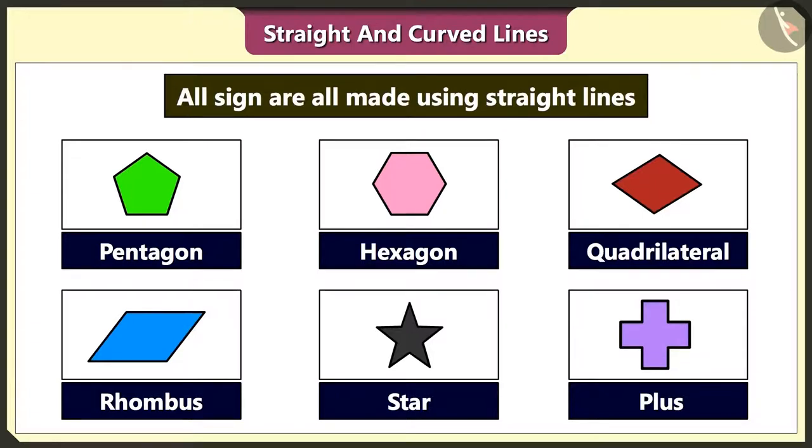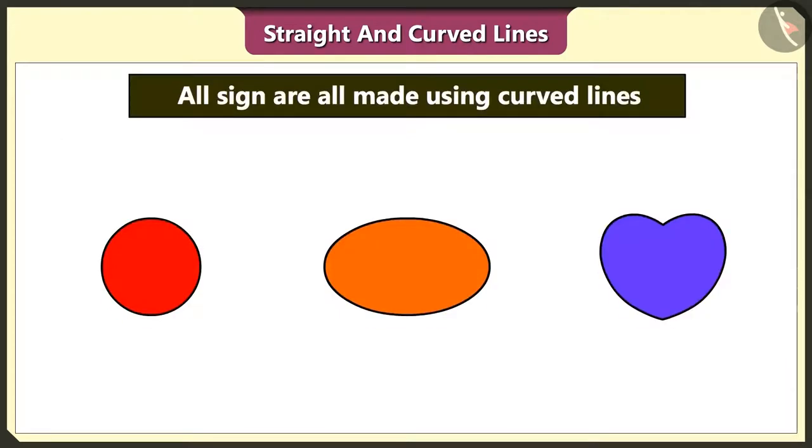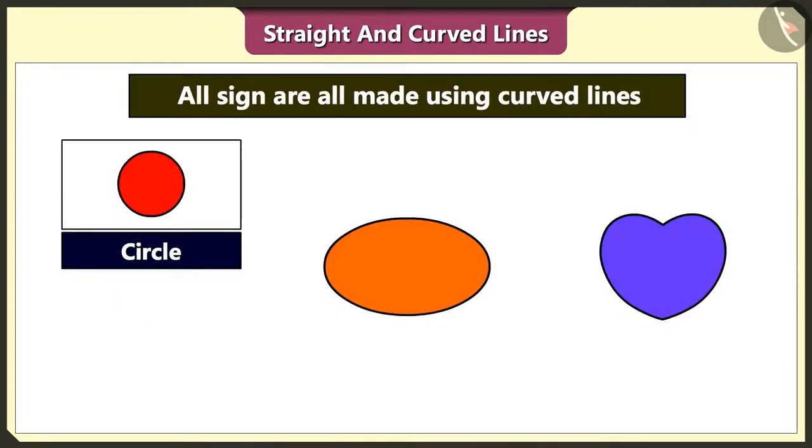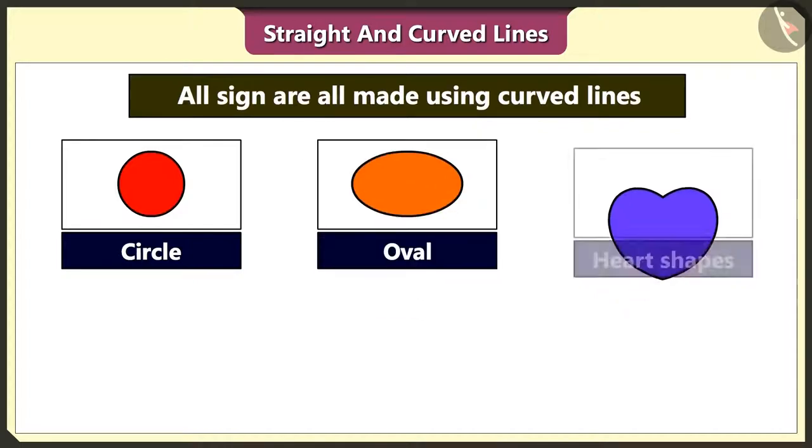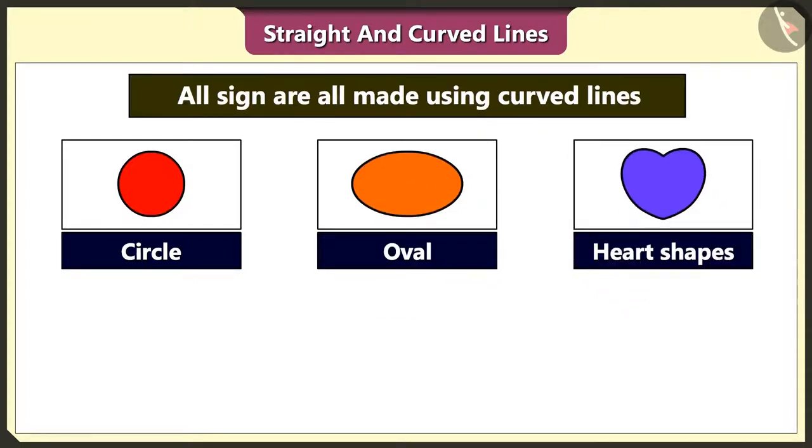We can make several shapes using straight lines. But we can make only a few shapes like circle, oval and heart shapes using curved lines.